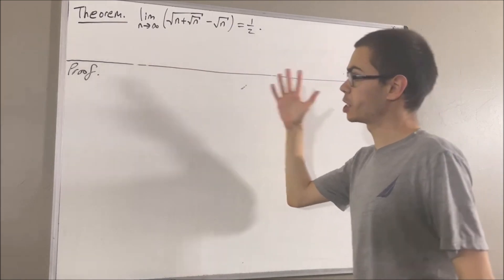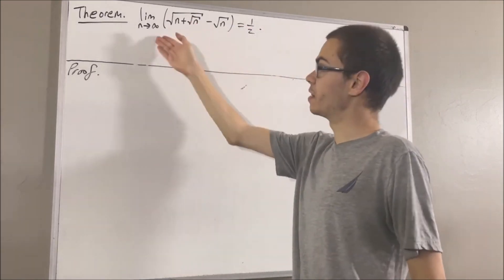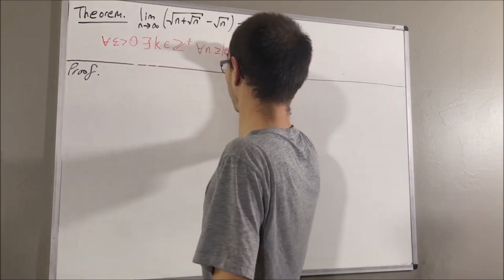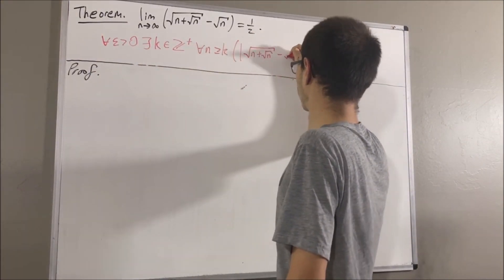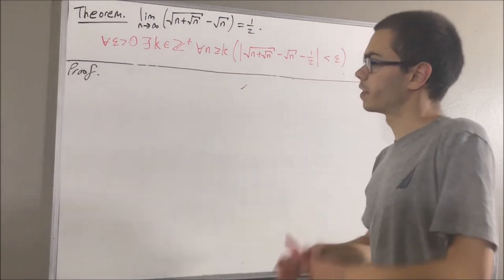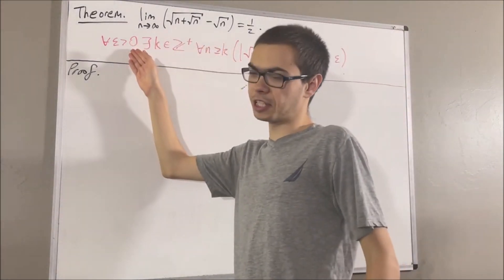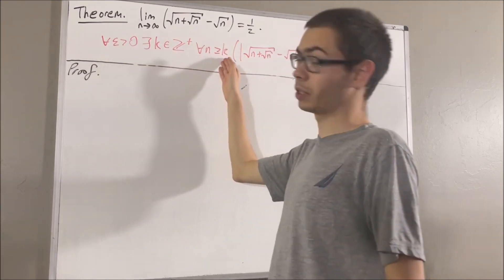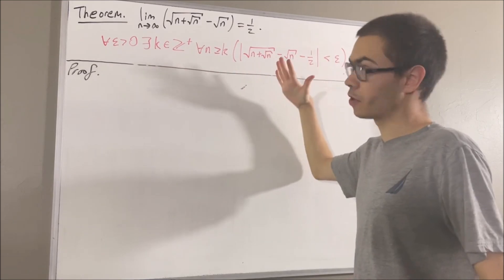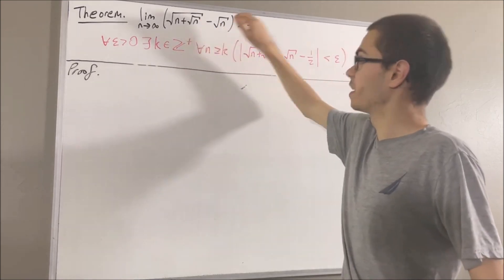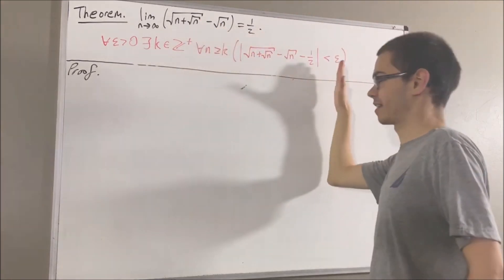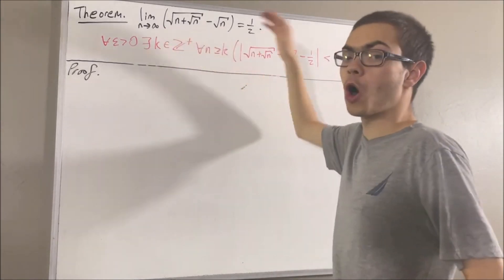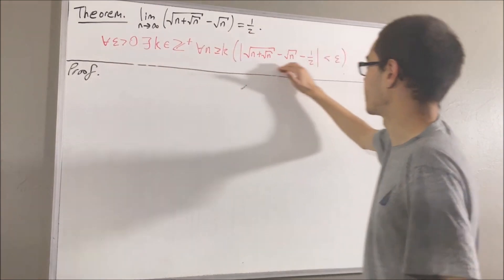Now, if you recall from the definition of the limit of a sequence, this means the following: for every epsilon greater than zero, there exists a positive integer k, such that for all positive integers n greater than or equal to k, the absolute value of the difference between this expression and one-half is less than epsilon. So to prove this, all we have to do is prove that this statement is true.